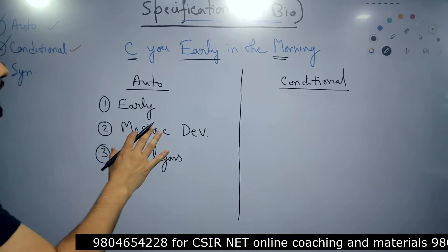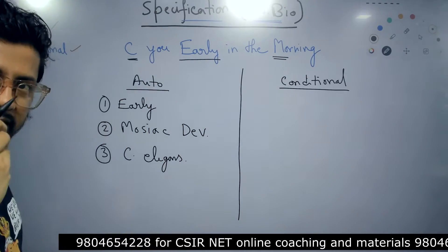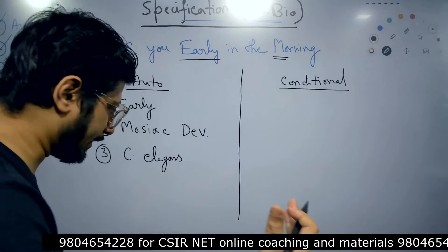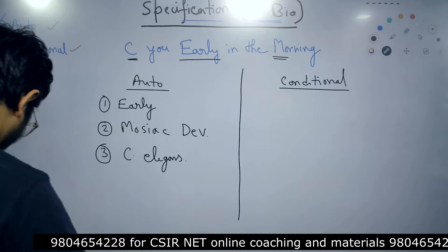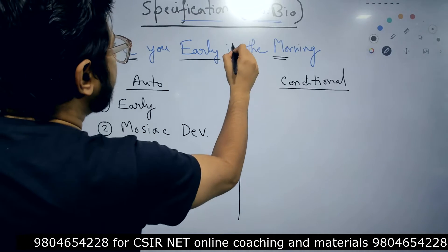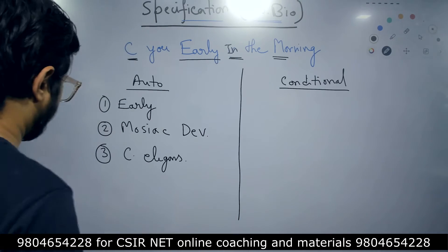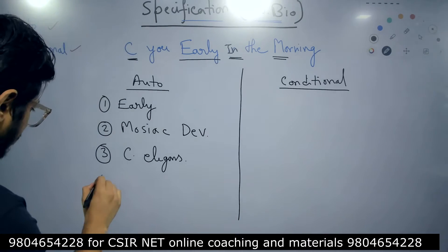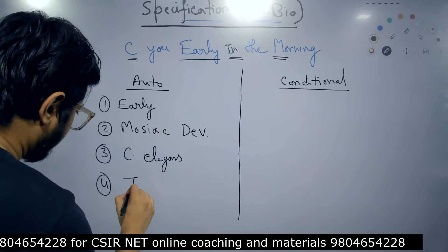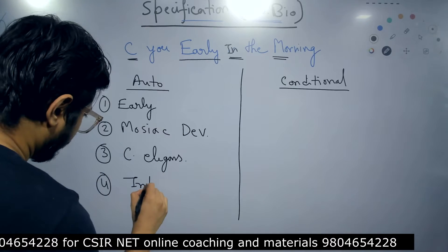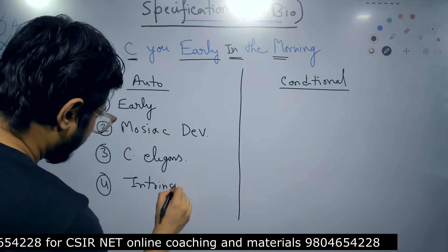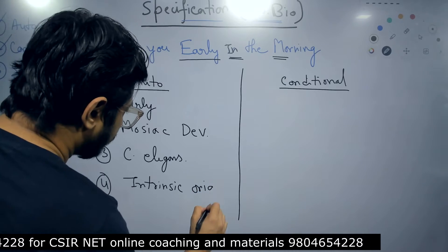MO stands for mosaic development — that is where we find this sort of autonomous specification in their developmental pattern. And another one we have is 'In,' which is also capitalized here. So 'In' stands for intrinsic origin — intrinsic origin.